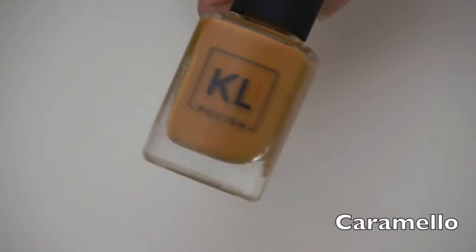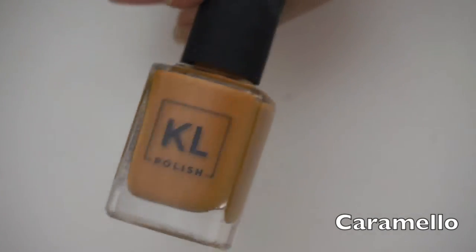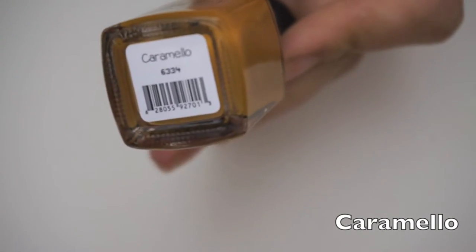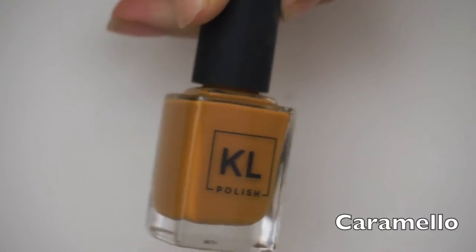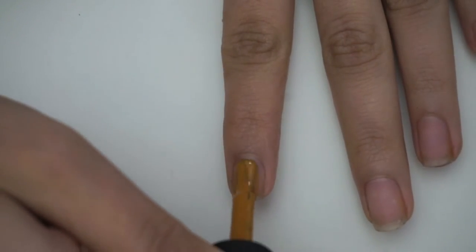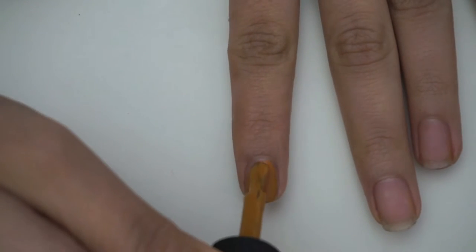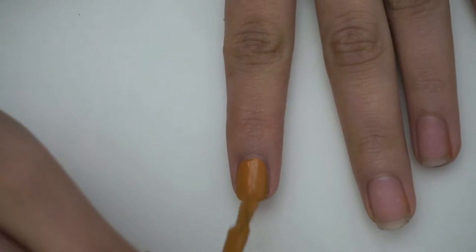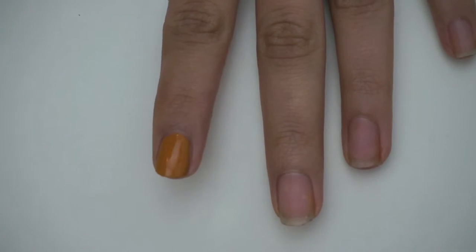Now for one of my favorite colors, Caramelo. This reminds me of a little candy, the little caramel candy squares. It basically dries up that color and it looks mustard, but it actually dries up darker than this. It just looks like it in the setting, but honestly I really like this color.